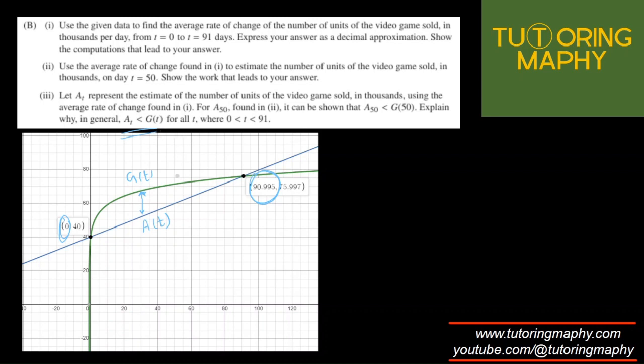And why, if you want to justify in general? Because the rate of change, the rate of change of G of T is more than A of T because it is increasing at a higher rate. G of T is increasing at a higher rate. G of T is increasing at a higher rate when compared to A of T. So that's the reason why G of T in general is greater than A of T as seen from the curve as well.